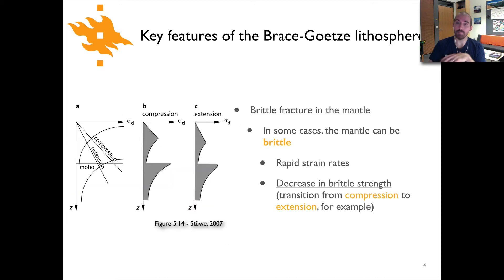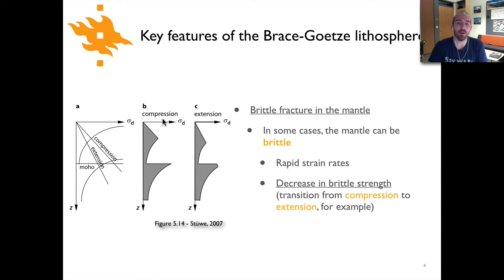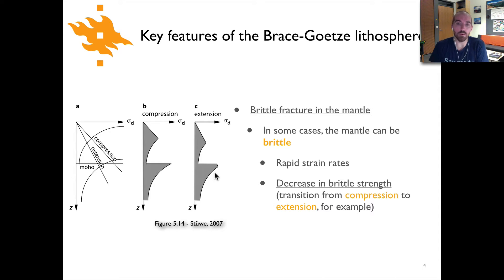Here's one example: a transition in the dominant tectonic stresses. If we were to transition from the lithosphere being under compression to extension — as we saw previously, rocks under compression have a larger frictional plastic strength than rocks under extension — you can see an example where under compression there is no frictional plastic portion of the mantle lithosphere, but there is an equivalent frictional plastic region when the lithosphere is under extension. So that's one way we could have brittle behavior in the mantle.